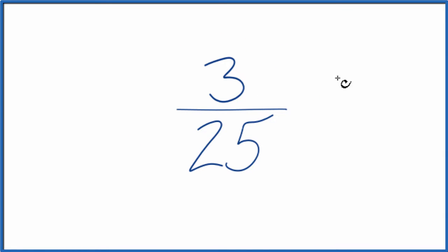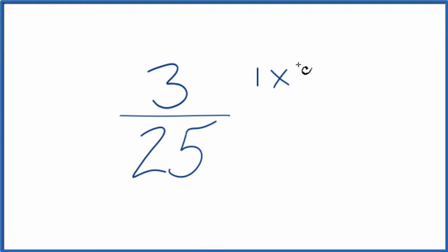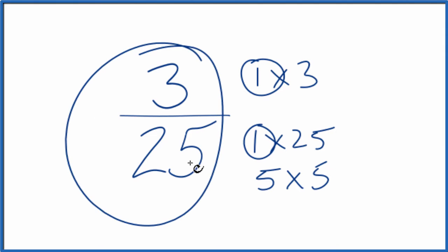Think of it this way: if you write the factors for 3, you get 1 times 3. For 25, it's 1 times 25 and 5 times 5. So the only common factor is 1. 3 divided by 1 is 3, 25 divided by 1 is 25, which gives us 3/25. That's what we started with, so the fraction 3/25 is already simplified.